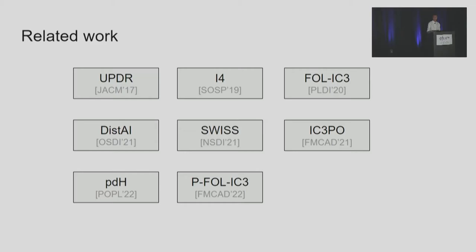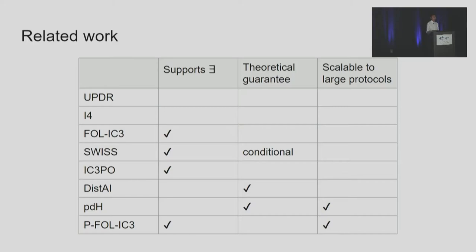There's a large body of existing work on invariant inference to verify distributed protocols. Just in the past 18 months, at least seven papers have been published in this area, including our prior work DisDai, which won the best paper award at OSDI last year. We can roughly divide existing tools using three criteria: whether they support existential quantifiers, whether they have a theoretical guarantee to find the correct invariant, and whether they are scalable to large complex protocols such as stoppable Paxos. No existing tool can do all three.